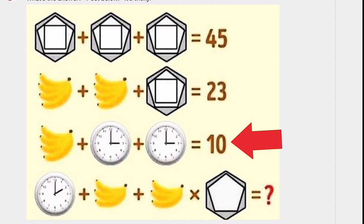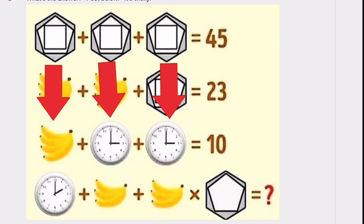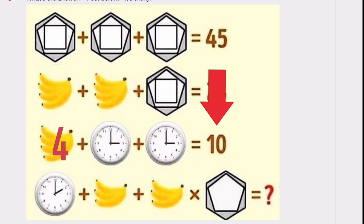So now let's move to the third one. A banana bunch, or in this case, a banana bunch of four bananas, plus a clock plus a clock equals 10. So if you knew the banana bunches were four and you subtracted four from the 10, you would get six. And it would be easy to look at those two clocks and say each of these clocks are worth three.